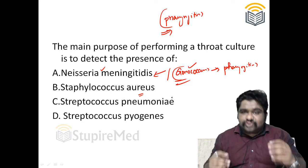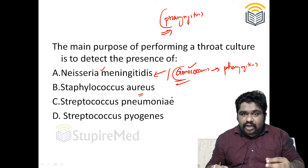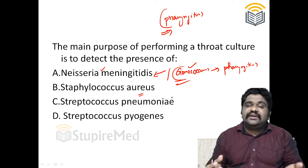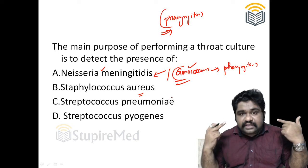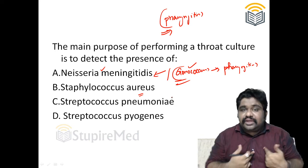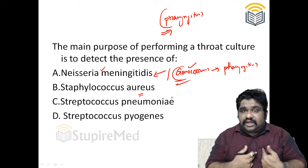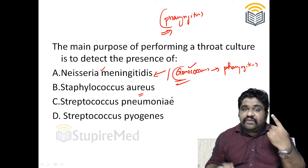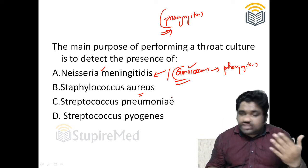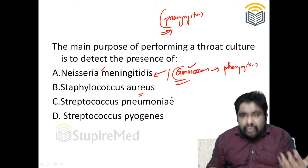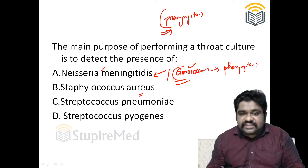Streptococcus pneumoniae is known for causing orbital cellulitis, otitis media, pneumonia, and some keratitis, but Streptococcus pneumoniae is not known for causing pharyngitis.